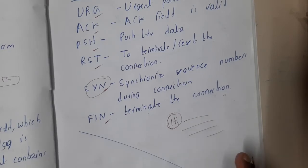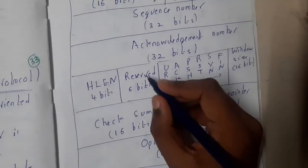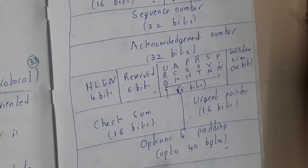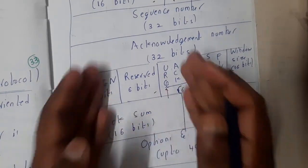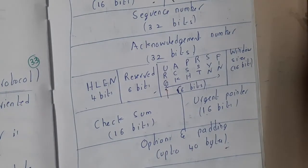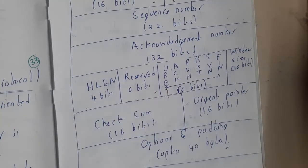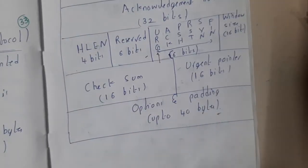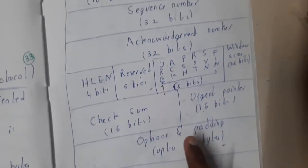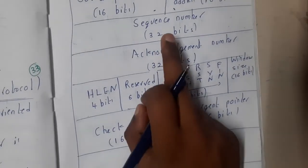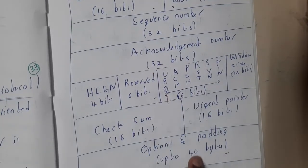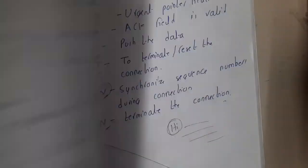Regarding the reserved bits — those six bits are reserved for future use and have no specific function right now. Options and padding are used based on size requirements; if you need to increase the sequence number, acknowledgement, checksum, or any other field, these bits are used.